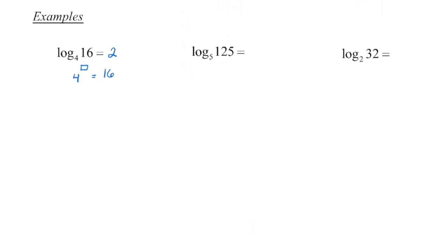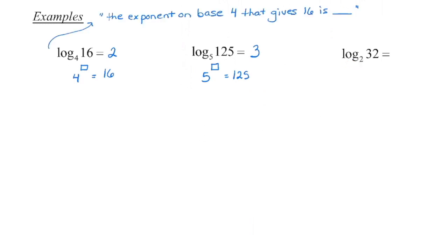The second one: the exponent on base 5 that gives us 125. We know 5 cubed is 125, so that's the value of the logarithm. Pause the video and try the last one. The exponent we put on 2 that gives us 32 is 5. If you're not sure, grab your calculator and go: 2 to the power of what gives us 32?